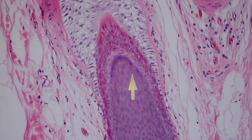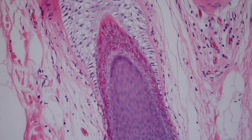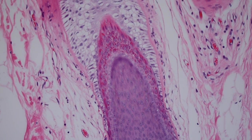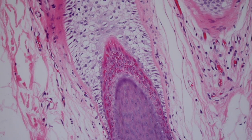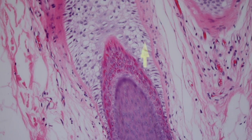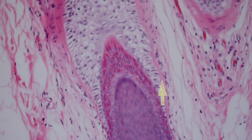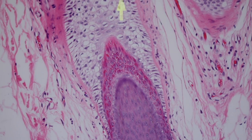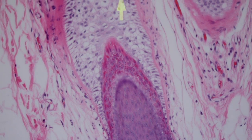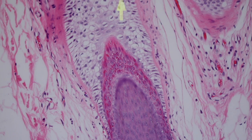The inner root sheath has a couple of layers — a cuticle, a Henle layer, and a Huxley layer — though those aren't really important for most medical students or pathologists to know. On the outside is this outer layer that looks very different: it has very clear, columnar, tall cells that some people think look like piano keys. That's called the outer root sheath, and it's clear because the cells are filled with glycogen, which washes away during tissue processing and leaves these clear spaces.